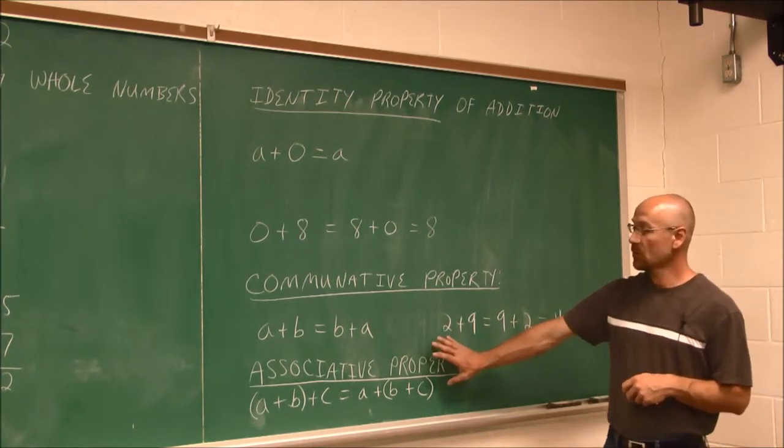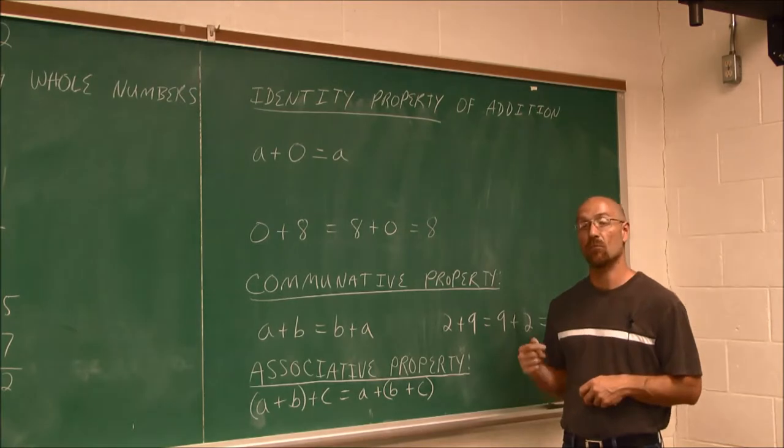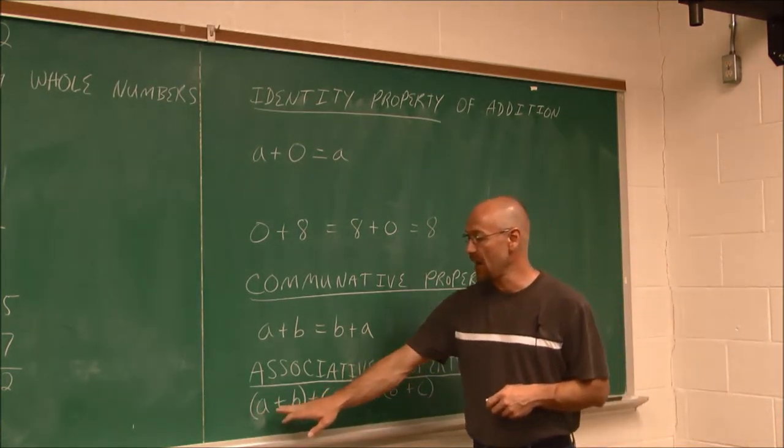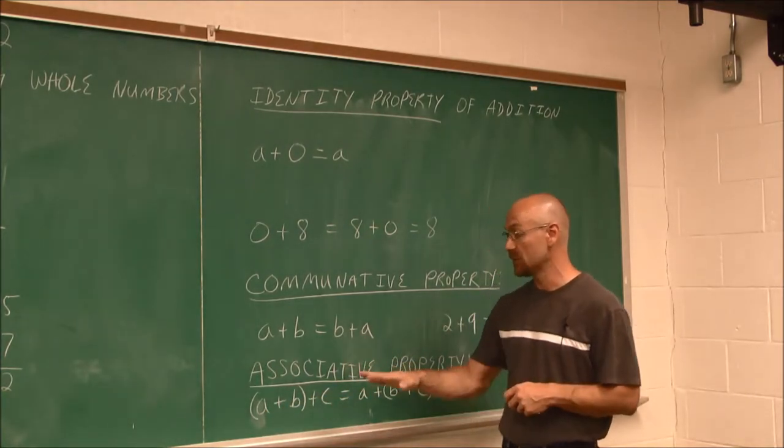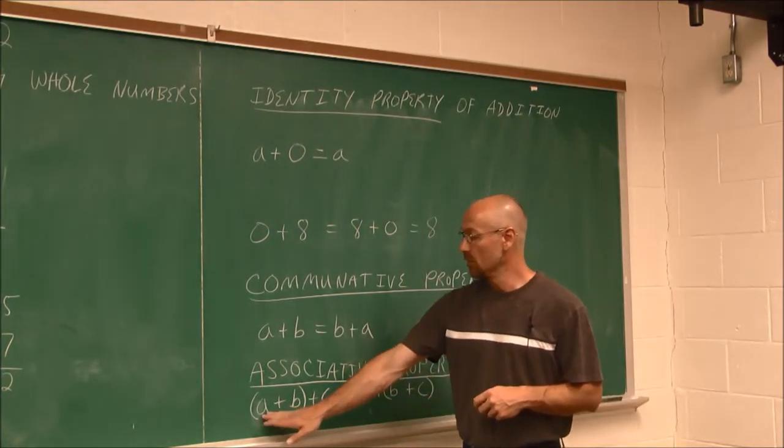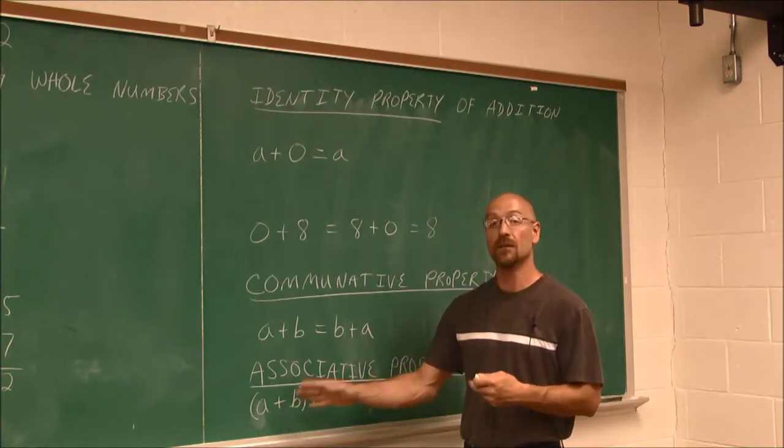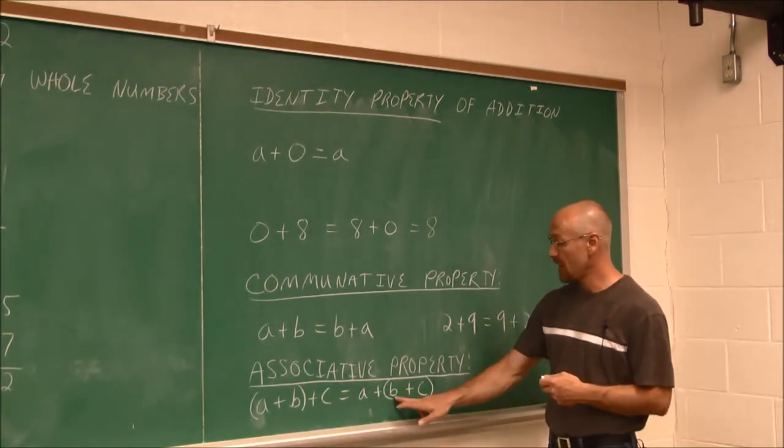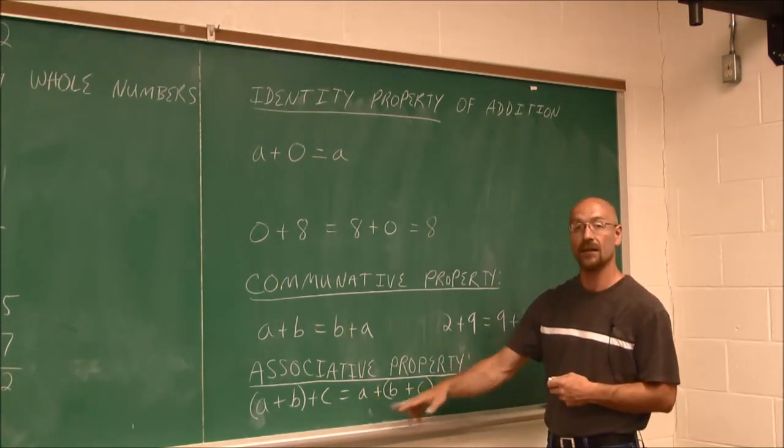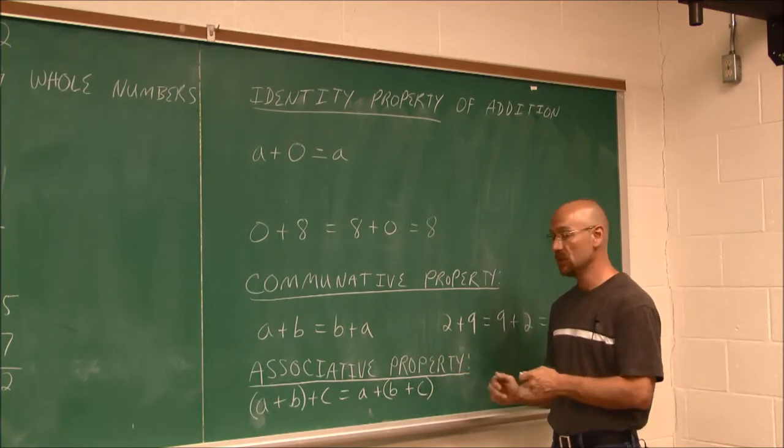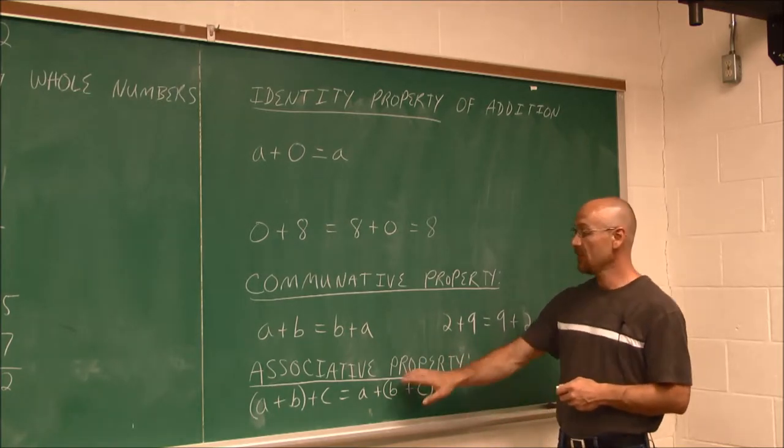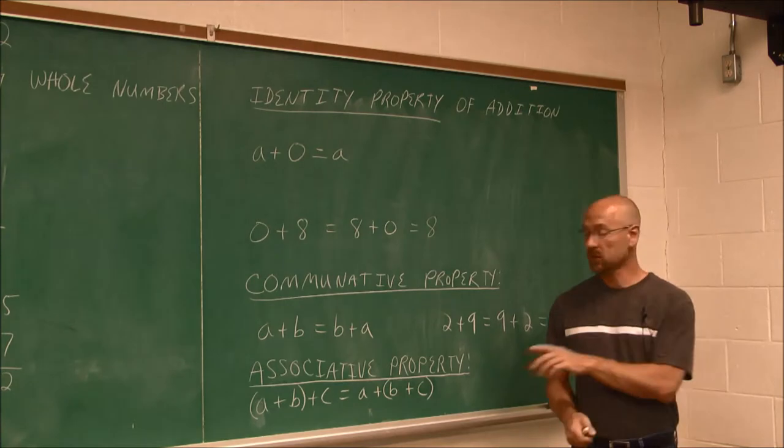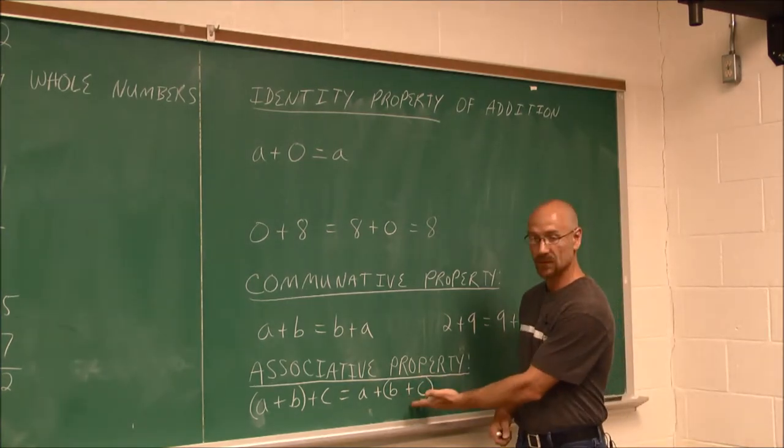We also have the associative property. This applies when we have more than two values that we're finding the sum of. As an example, if I have a plus b plus c, three different values, three different numbers, we can add them a plus b. We can do that value first and then add c to that. Or we can find b plus c first and then add a to find the total sum. So the order in which we do the addition doesn't matter. And if there are more than two values, we call that the associative property of addition. Let's look at an example of this because, of course, this is a little bit more complex.